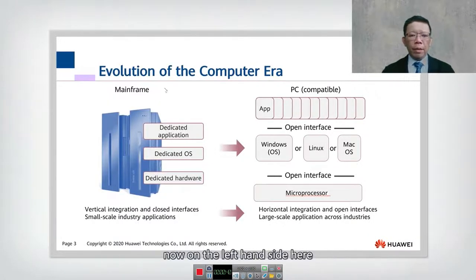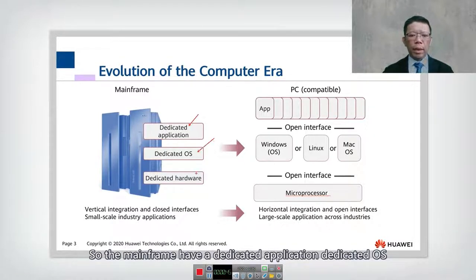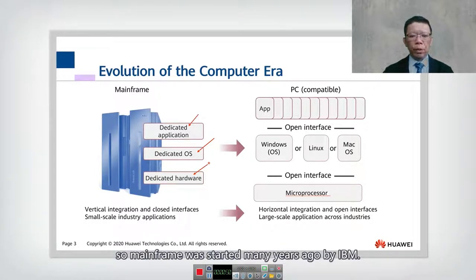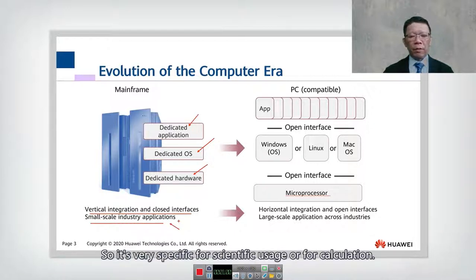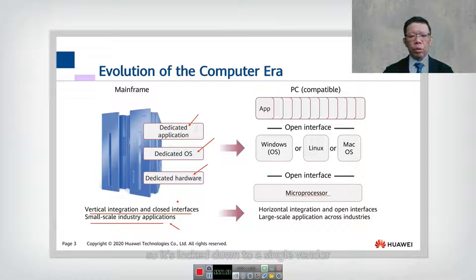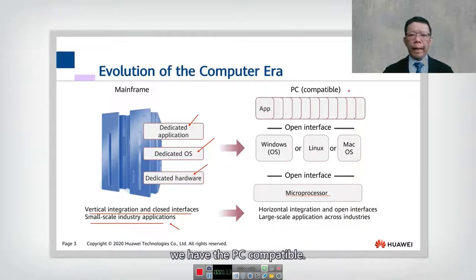Let's start by looking into the evolution of computing. On the left hand side we have the mainframe, which has a dedicated application, dedicated OS, and dedicated hardware — all proprietary. The mainframe was started many years ago by IBM and consists of vertical integration and closed interfaces, serving a small-scale industry with very specific scientific or calculation usage. All interfaces and hardware are locked down to a single vendor.